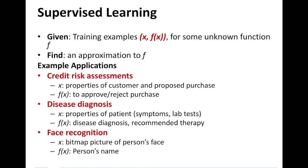To introduce supervised learning formally: we have a bunch of training examples, and the word 'supervised' comes from the fact that you have labels. We denote examples as x and f(x), where f(x) is a function over x, and we often say f(x) = y, where y is the target you want to predict. We assume there is an underlying true f from which the y's come. Our job when building a machine learning model is to find an approximation to this true f.